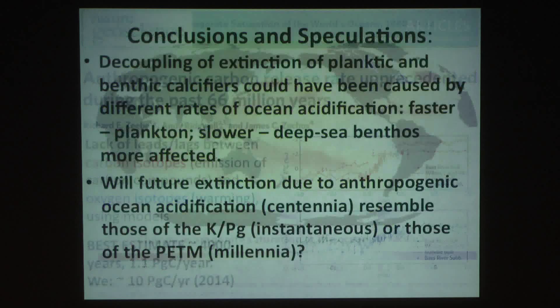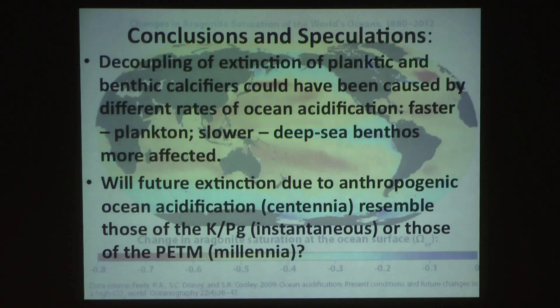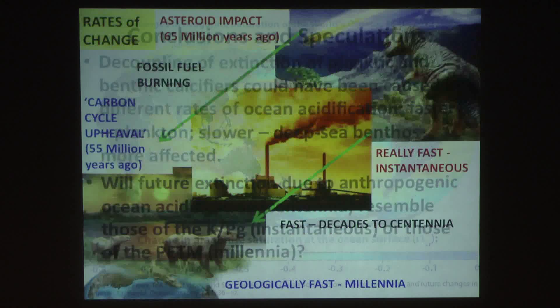So, conclusions and speculations. I would argue that the decoupling of the extinction of planktic and benthic calcifiers could have been caused by different rates of ocean acidification. With faster rates, you affect the plankton and things that live in shallow water such as coral reefs, and with slower rates, we affect the deep sea benthos. And so the question remains whether future extinction due to anthropogenic ocean acidification will resemble those of the Cretaceous-Paleogene or those of the PETM. From the last couple of slides, I'm starting to think that what we're doing will be closer to asteroid impacts than to carbon emissions.